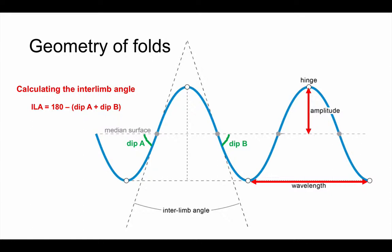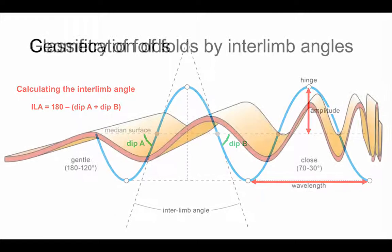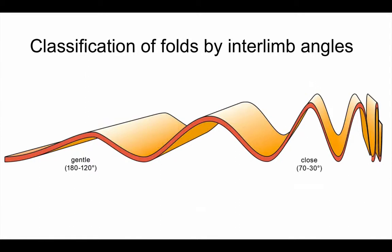Once we've got that angle calculated, we can then start to determine what type of fold we're looking at, how we can actually describe it. This diagram shows us the difference between them. The inter-limb angle defines what type of description we can give to the folds. You can see that there are some marked on already. The ones we need to know for the syllabus are open folds, that have an inter-limb angle of somewhere between 120 and 70 degrees.